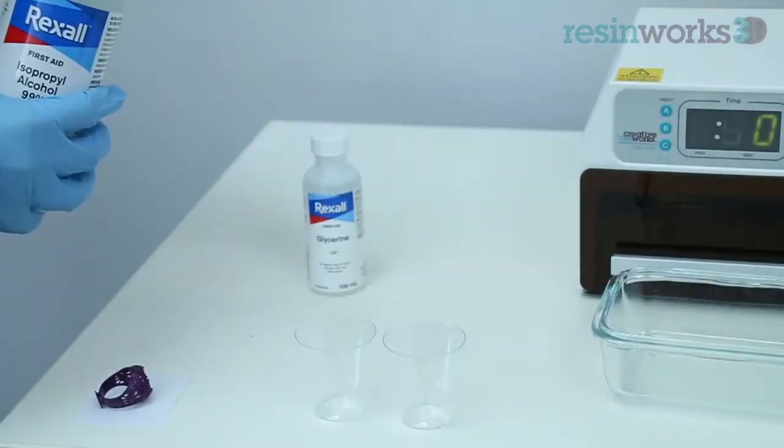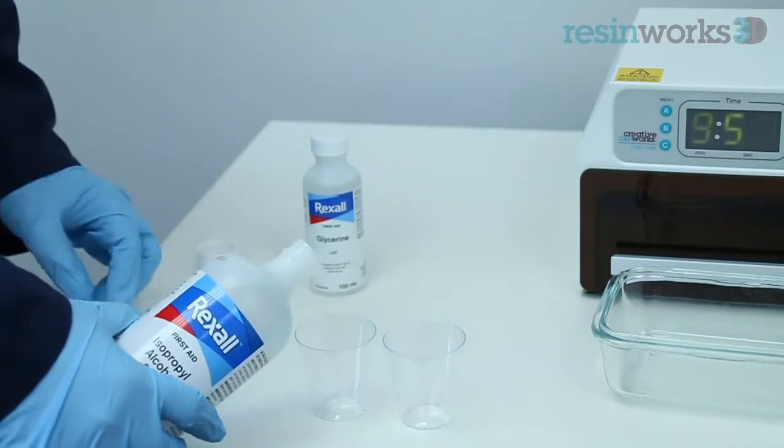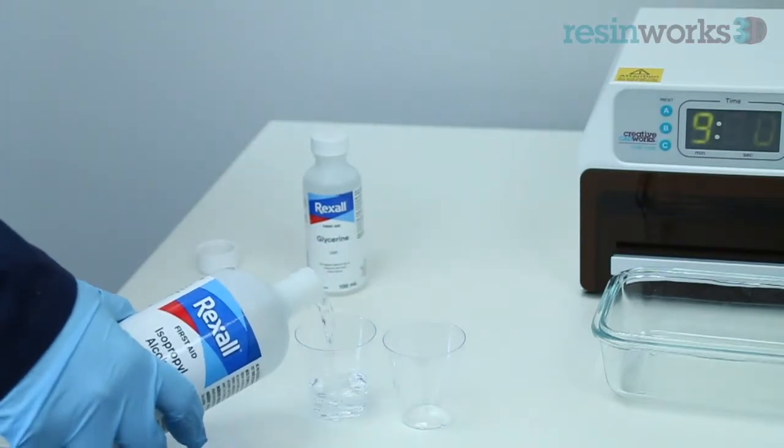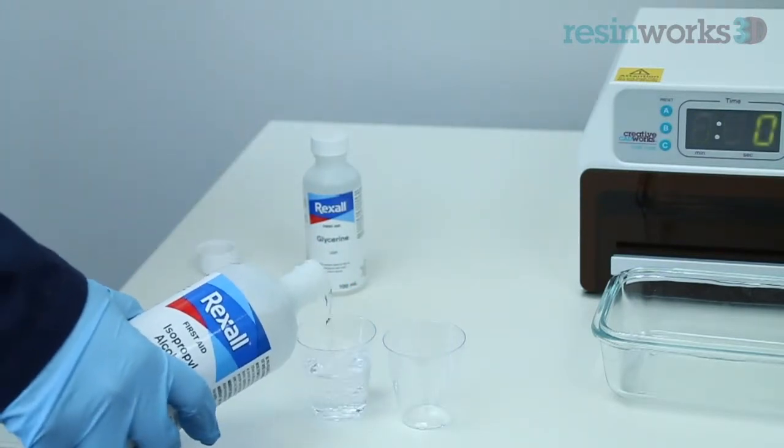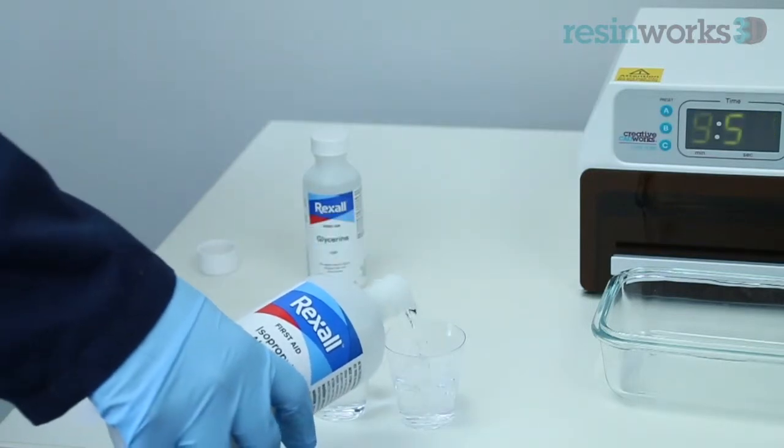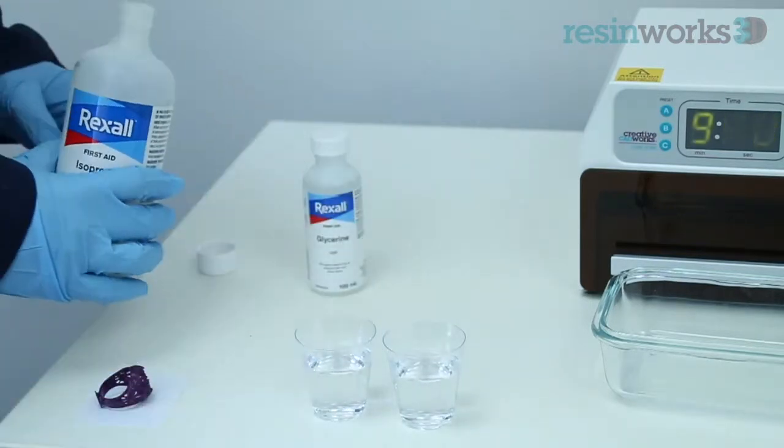Starting with the IPA, pour it into the two cups. The reason why we have two cups of IPA is because we initially rinse the model in the first cup and further clean the model in the second cup. This will allow us to get rid of any remaining residue.